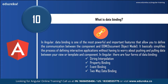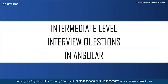What is data binding? Data binding is one of the most powerful and important features — it allows you to define the communication between the component and the Document Object Model (DOM). It specifies the process of defining interactive applications without having to worry about pushing and pulling data between your view/template and component. In Angular there are four forms: string interpolation, property binding, event binding, and two-way data binding.